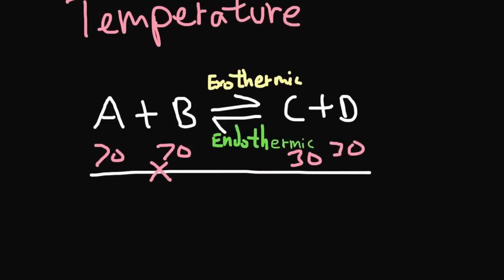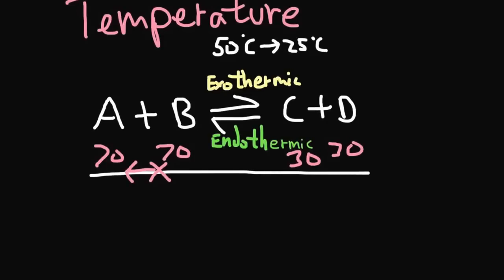So I want to shift it more to the right-hand side. When I increase temperature, it will go towards the endothermic direction. So I don't want to increase the temperature, because if I increase the temperature the equilibrium will shift in the endothermic direction — it will shift this way, which I don't want. So in this example, because the forward reaction is exothermic, if I want to get more of C and D, what I have to do is decrease the temperature. If I decrease from 50°C to 25°C, that's going to shift my equilibrium to the right-hand side, making more of C and D.